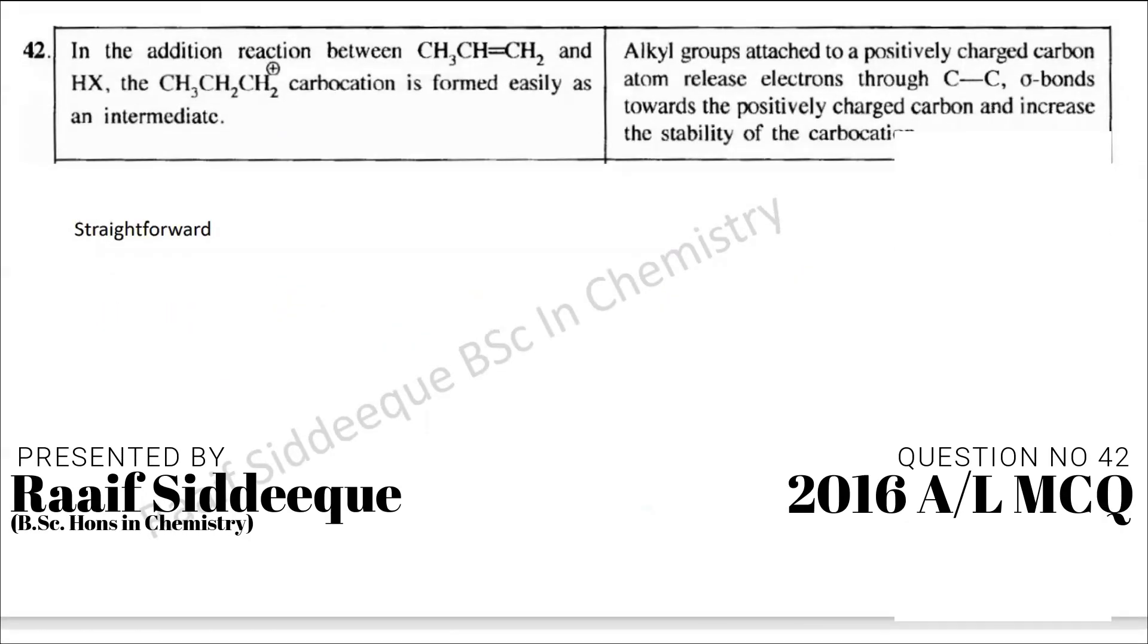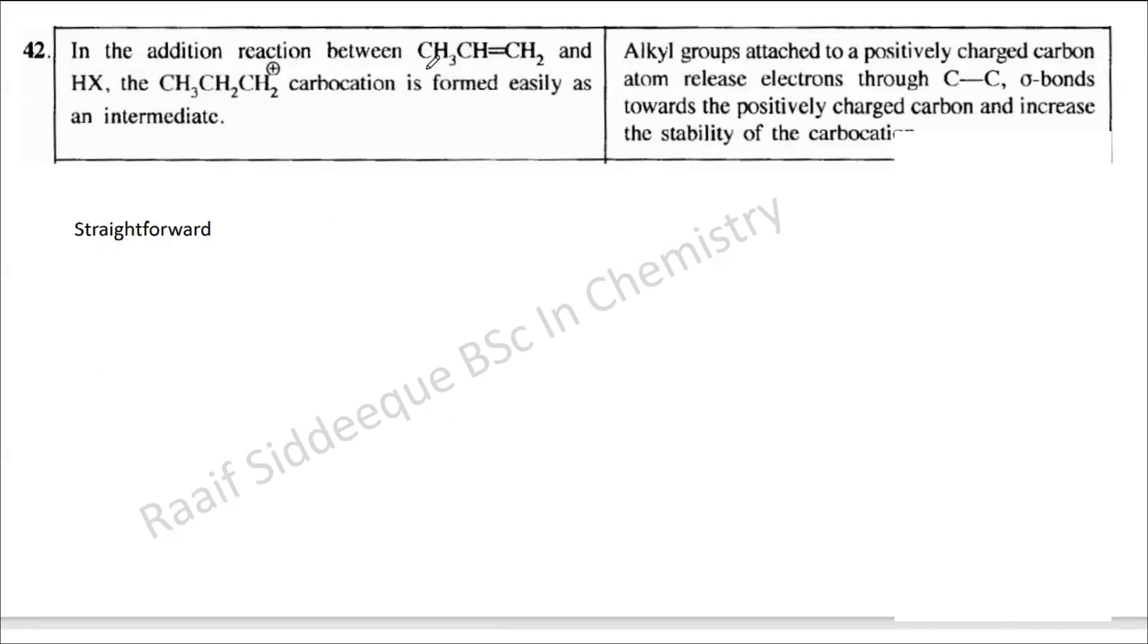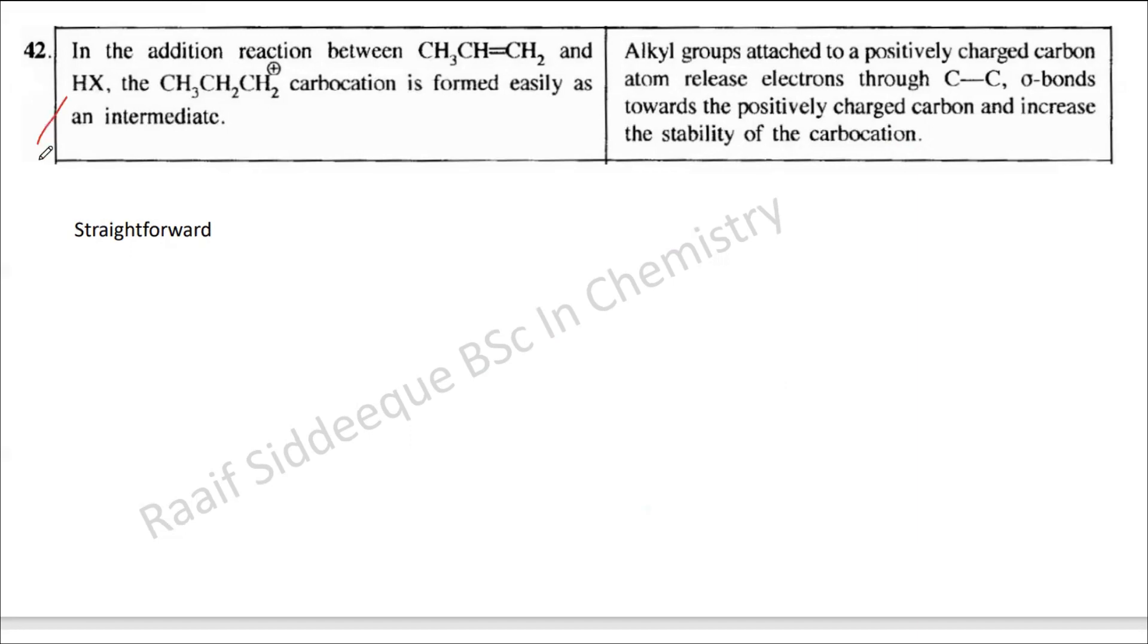Question number 42: In the addition reaction between CH3CH=CH2 and HX, for example HBr, CH3CH2CH2 carbocation is formed easily as an intermediate. Automatically you see this is wrong.